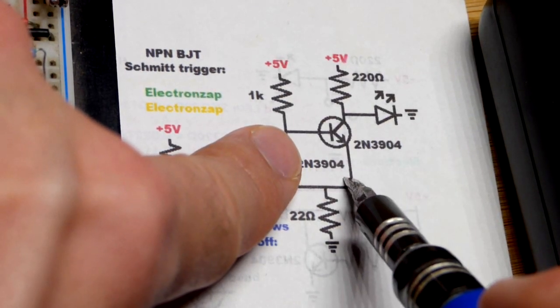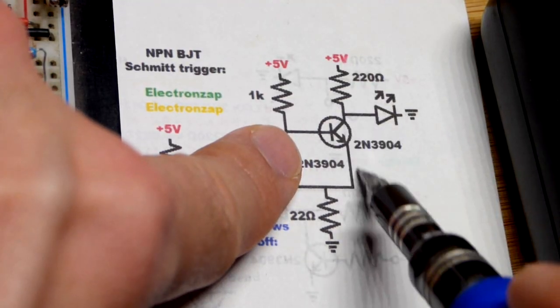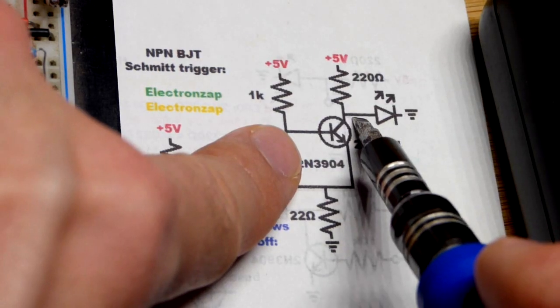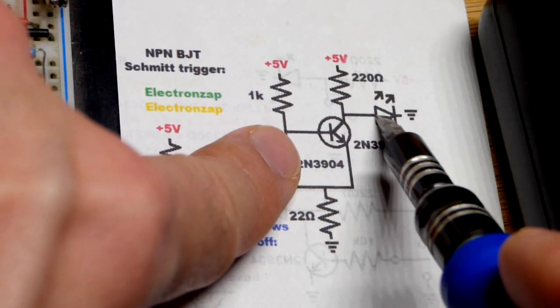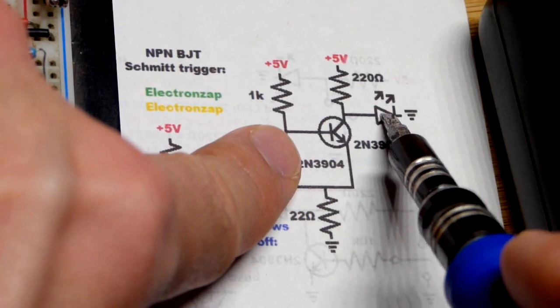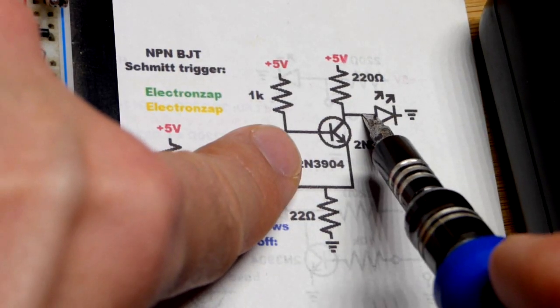But in any case, when the transistor turns on, now we have an almost direct connection to ground right there. It drops that voltage to almost zero, so the LED is off.